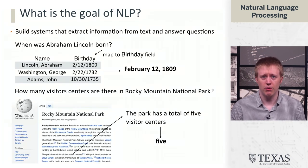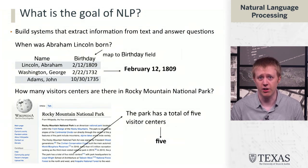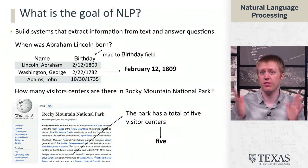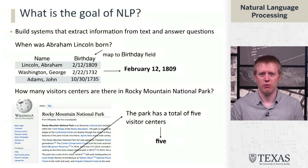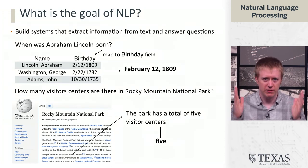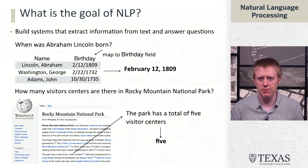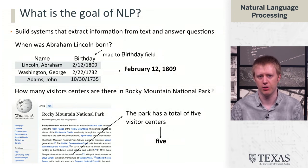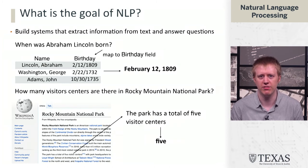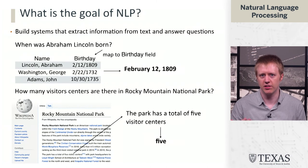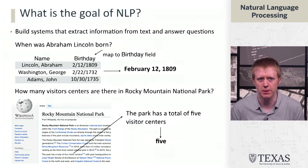It gets even trickier when you ask about things that aren't in a database. For example, how many visitor centers are there in Rocky Mountain National Park? You could theoretically have a database that stores this information, but I guarantee you Google does not. Instead, what we need to do is retrieve some information from the web using something like Google search, and then try to find a relevant snippet and answer the question based on that. In this case, the third paragraph of the Wikipedia article has a sentence that tells us the park has a total of five visitor centers. We're going to learn techniques in this course that will allow us to understand this pipeline.